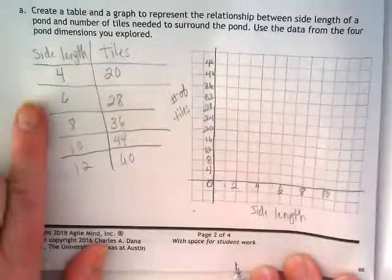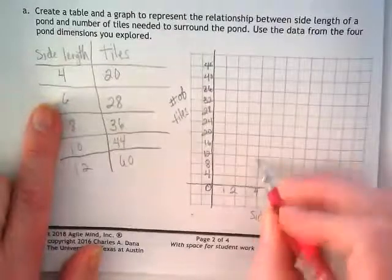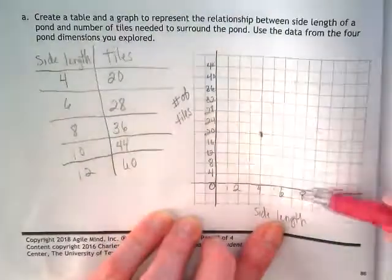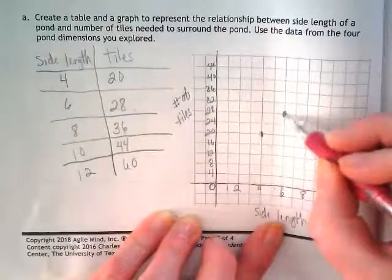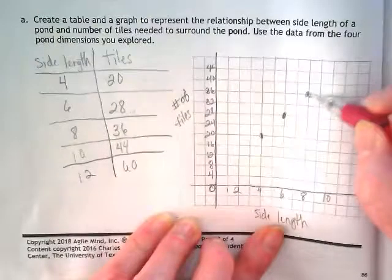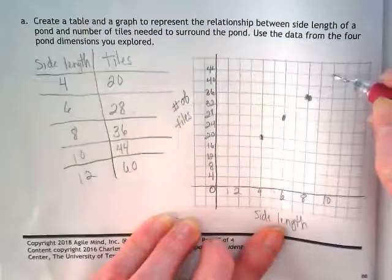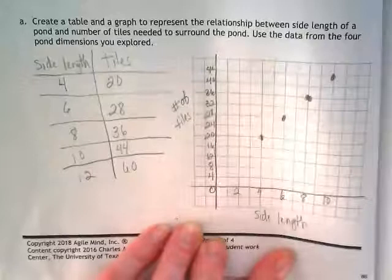Let's go ahead and graph some of these points. We have 4 and 20. I just poked a hole in my paper. We have 6 and all the way up to 28. 8 is going to be at 36. 10 is going up to 44. And I'm not going to get my 12 on there.